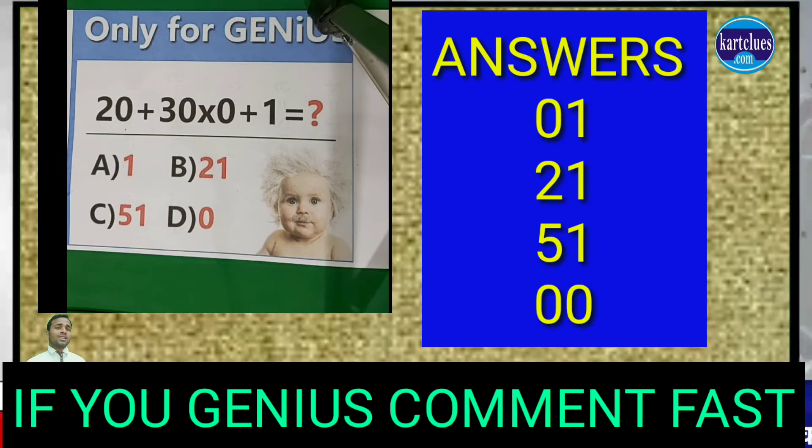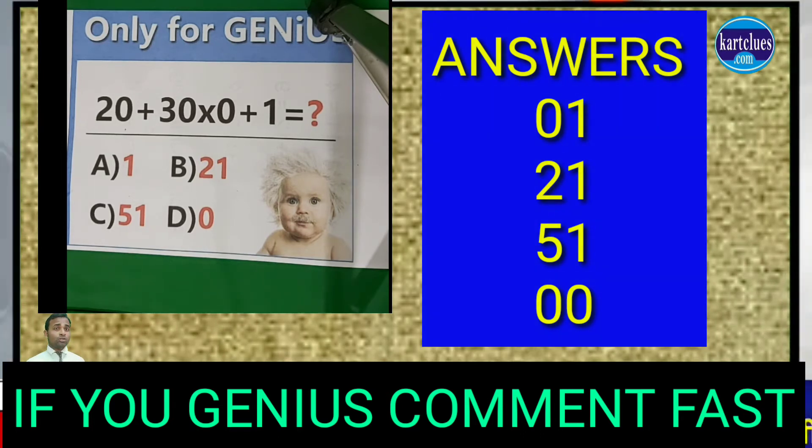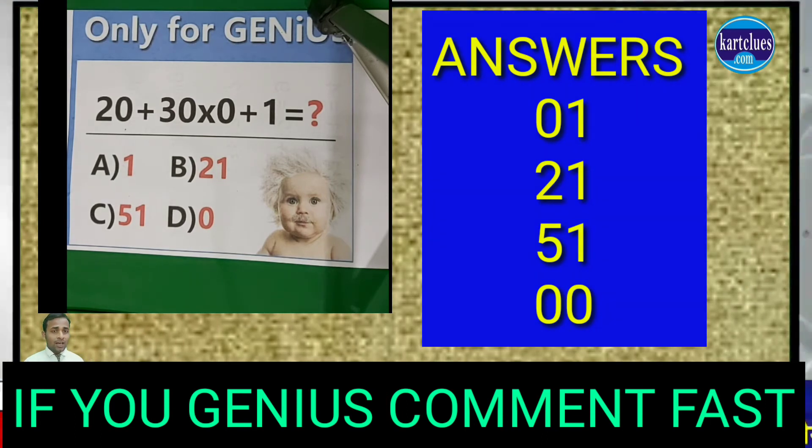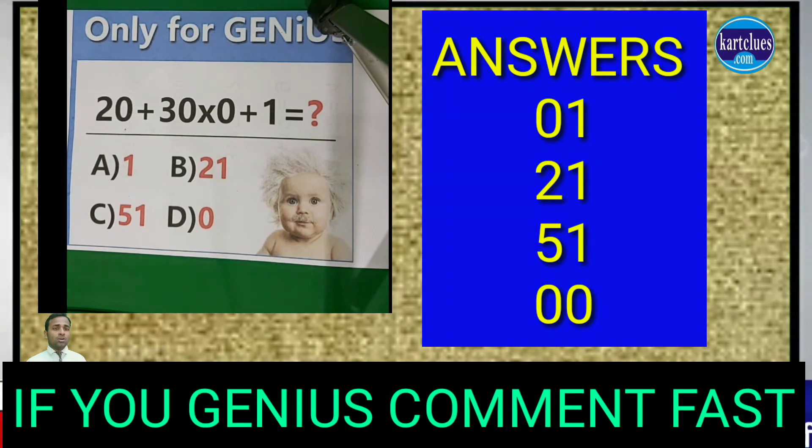Through the BODMAS rule, what do you have to do first? In BODMAS rule, you have to first do multiplication, and after that addition, and after that subtraction. So first in this equation, you have to do multiplication.